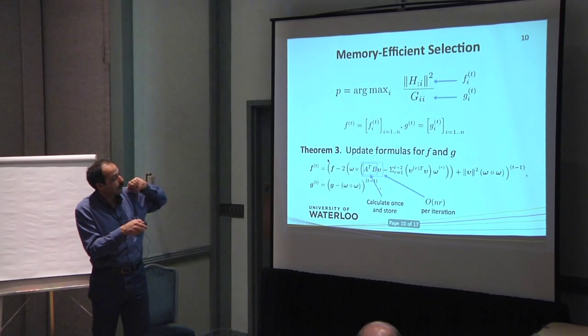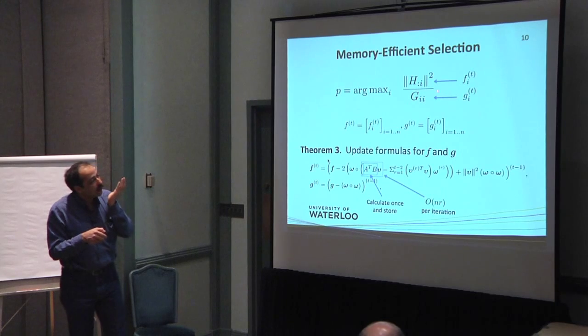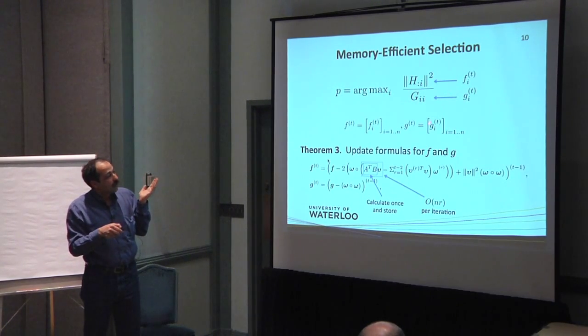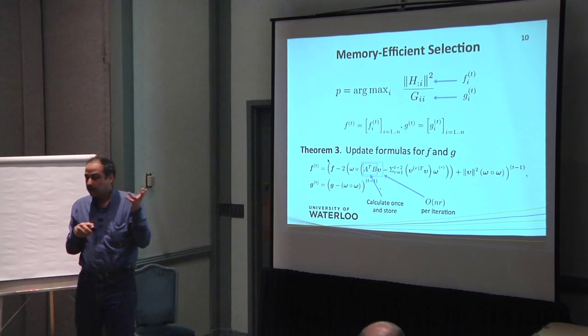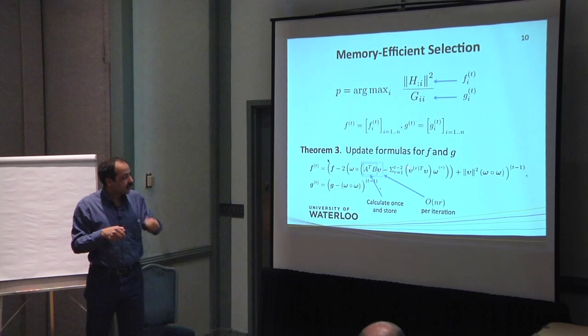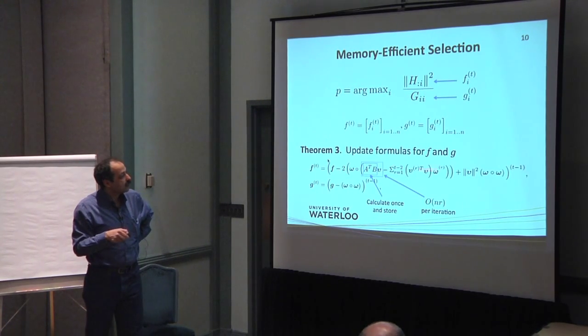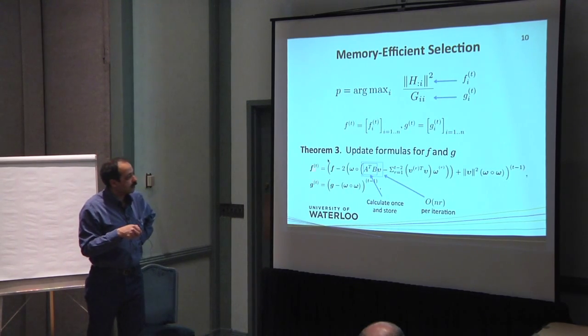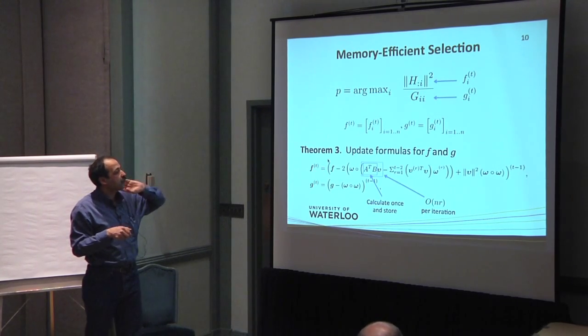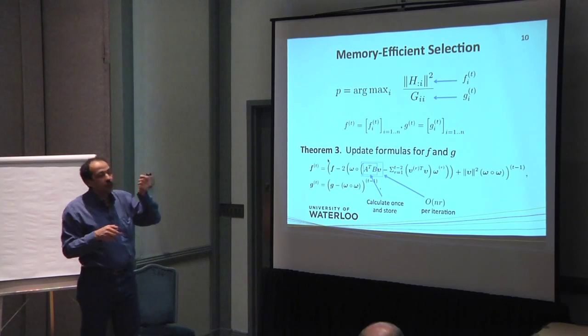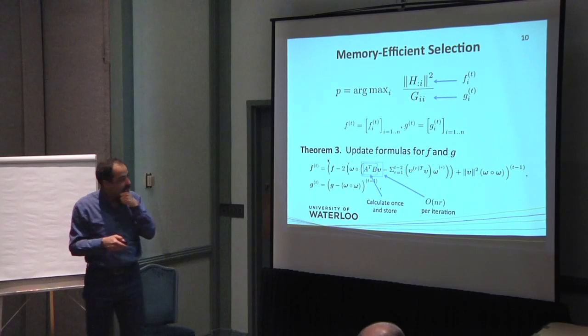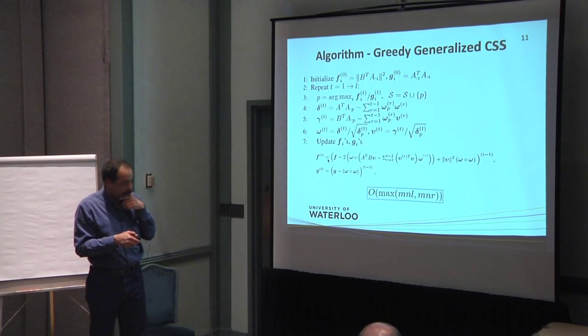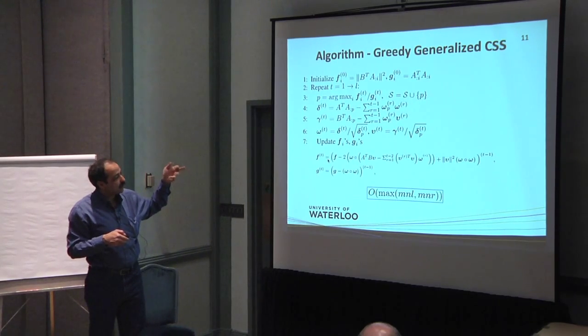It is still expensive, but skipping many details here, it can be shown that it can be simplified in terms of memory and in terms of computation. Details are in the paper and I am just skipping them. You can simplify this a lot and make it linear form by computing A transpose B once and keep it, and coming up with updates for two vectors which allow you to select basically columns very efficiently in linear time. So it leads to a very efficient algorithm, very quick algorithm.